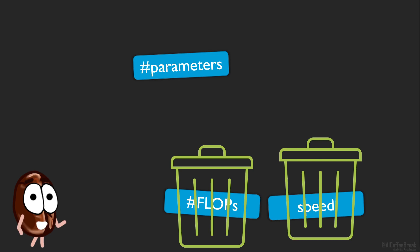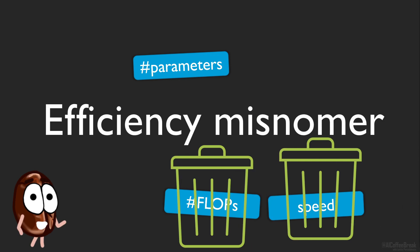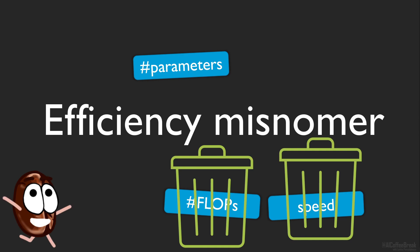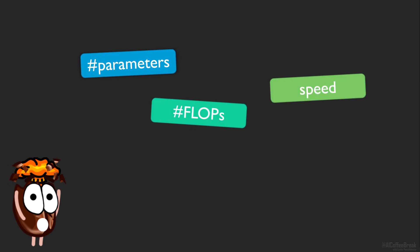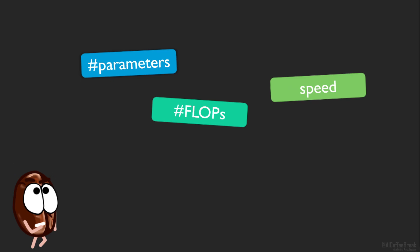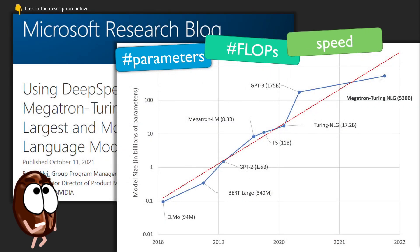This is what the authors call the efficiency misnomer. In other words, to avoid the current situation where people are just choosing the metric they shine at and ignore the others, the authors propose that all metrics should be reported when it comes to comparing architectures in general. But what are these metrics, and why does one measure alone not suffice to describe the computational cost of the model?